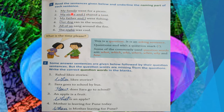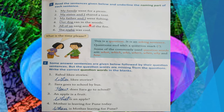Here 'my family' is the naming part, so underline it. Next: 'My sister and I shared a tent' — 'my sister and I' is the naming part, underline it. Next: 'My father and I went fishing' — 'my father and I' is the naming part, underline it. Next: 'Our dog ran in the woods' — 'our dog' is the naming part, underline it. Next: 'All of us sang around the fire' — 'all of us' is the naming part, underline it.